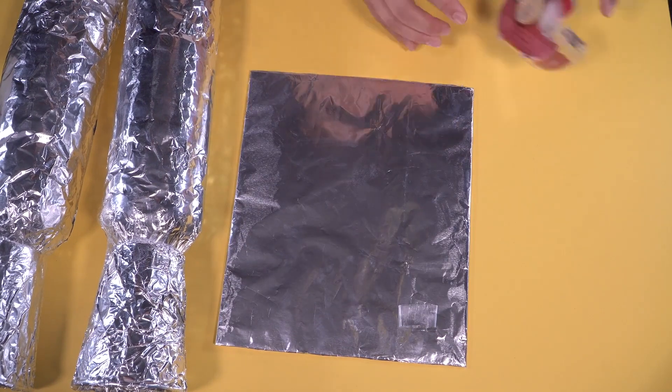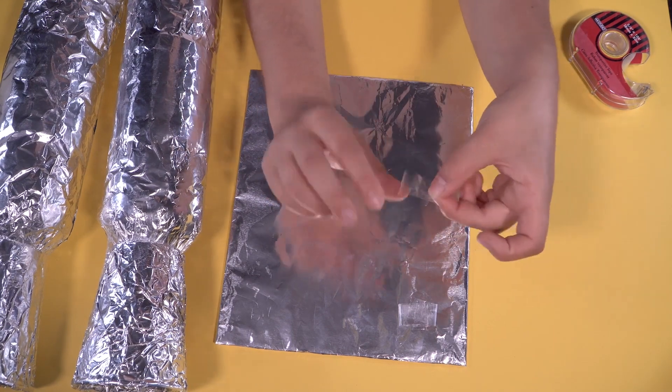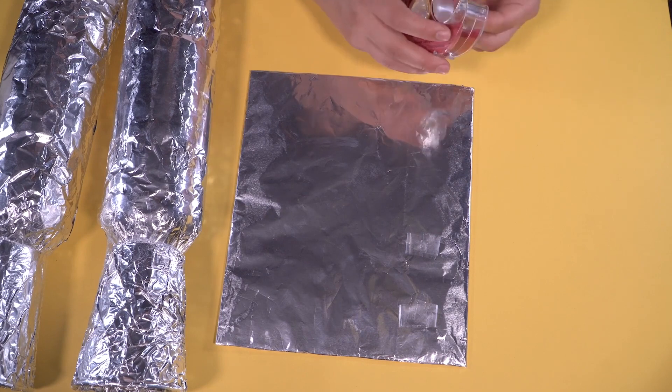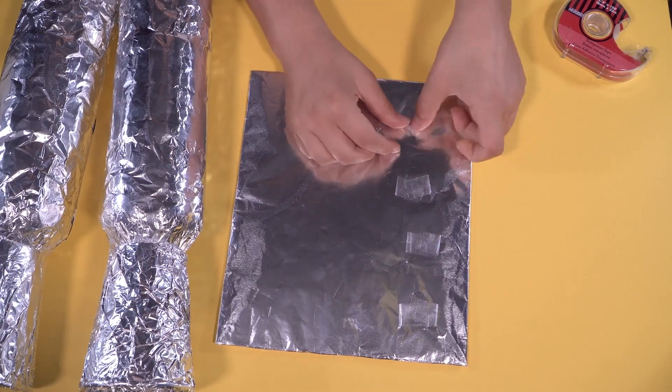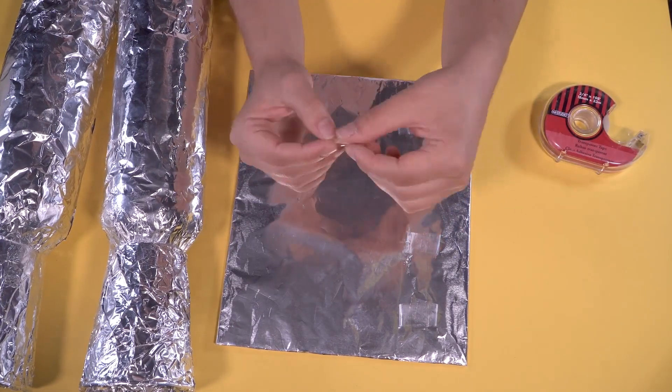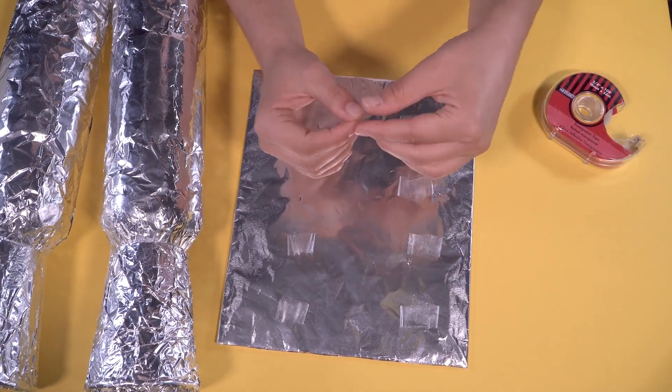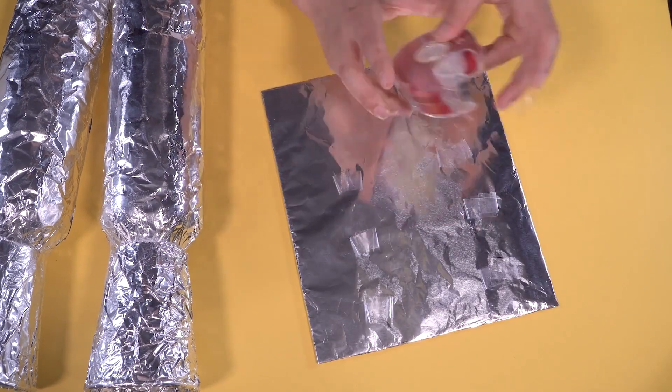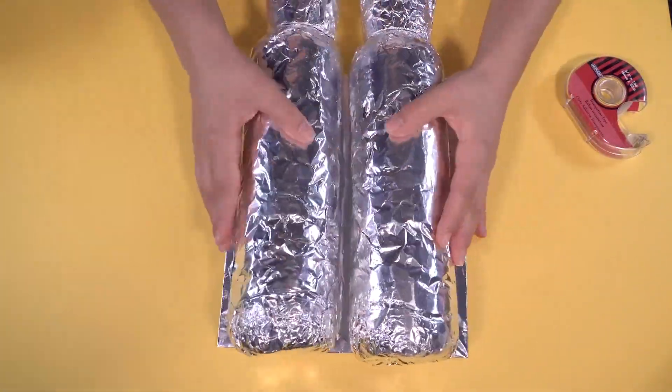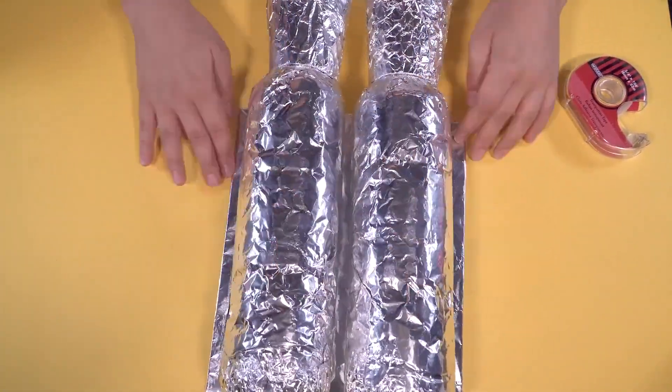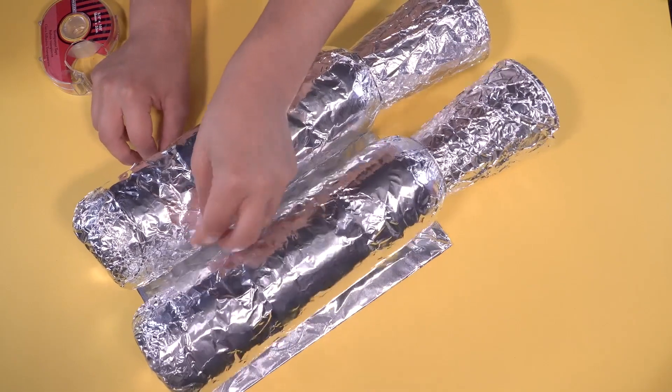Cut a few more pieces of tape and loop them around like this. And then, place your bottles on top. Add more tape to hold everything in place.